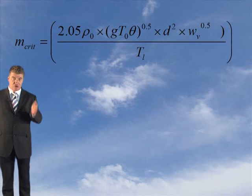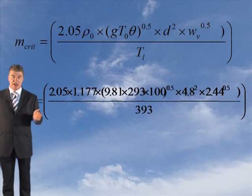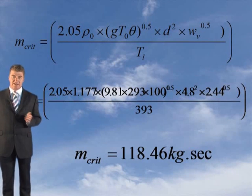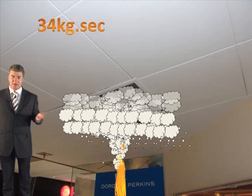When you put that into the MCRIT formula, all the known variables, you should have got a critical exhaust rate of 118.46 kilograms per second.